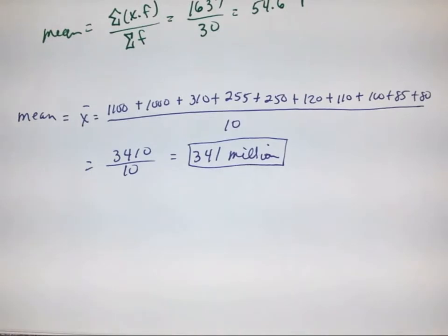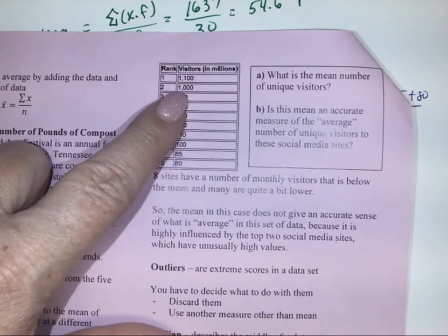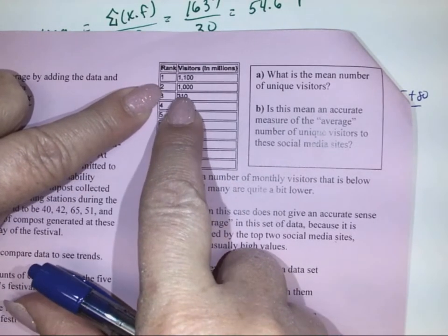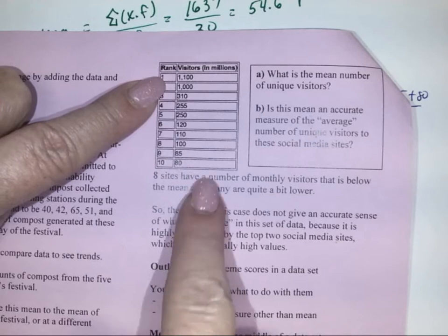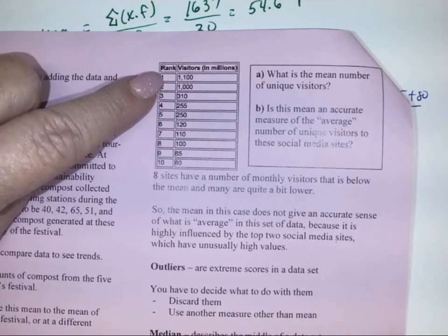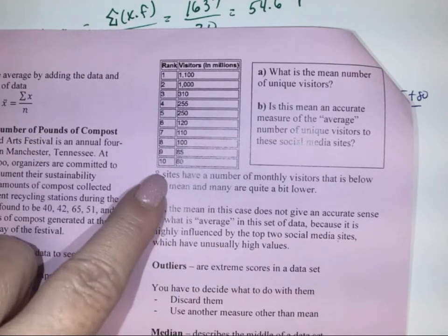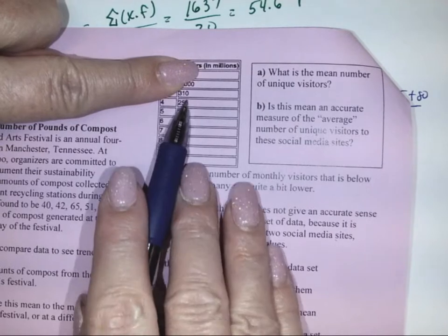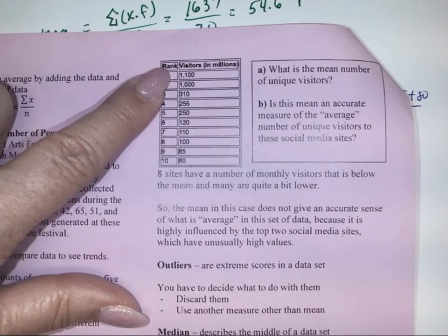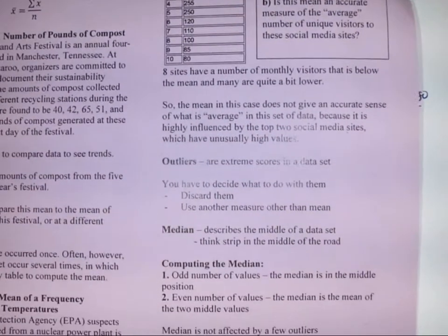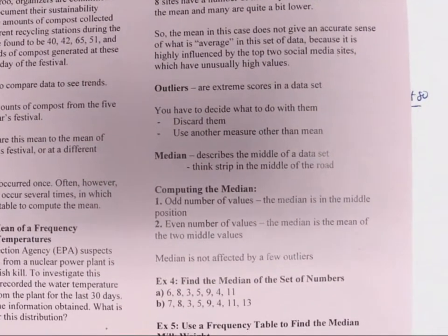341 is our mean. Now, the question for part B was, is it accurate? Well, if we look at the chart, 341 is way up here, so it's not anywhere near the middle numbers. Most of the sites are below that. We only have two that are really large up here, and so the mean or the average is being influenced by those two really popular sites. So we would not think that this is an accurate sense of what our average is. What we call those two that are up here are called outliers, and they are extreme scores in our data set. You have to decide what to do with them. You can either discard them or use another measure other than the mean.